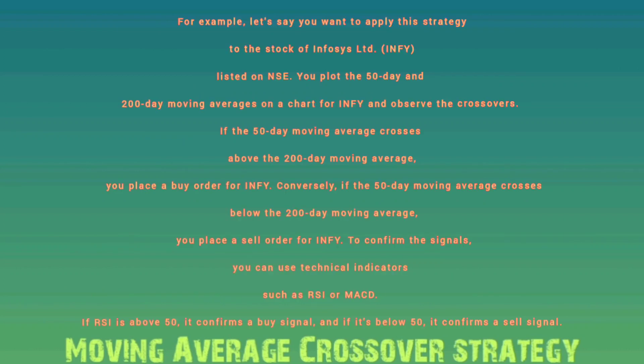For example, let's say you want to apply this strategy to the stock of Infosys Ltd. (INFY), listed on NSE. You plot the 50-day and 200-day moving averages on a chart for INFY and observe the crossovers. If the 50-day moving average crosses above the 200-day moving average, you place a buy order for INFY.